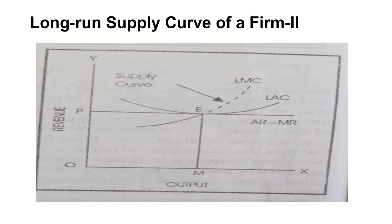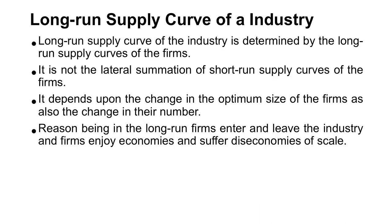Now we discuss the long-run supply curve of industry. The long-run supply curve of the industry is determined by the long-run supply curves of all firms. However, it is NOT the lateral summation of short-run supply curves of firms as in the short run. It depends upon the change in the optimum size of the firm as well as the change in their number, because in the long run firms enter and leave the industry.